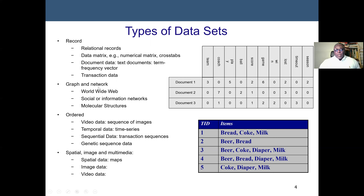Now we move to graph and network data sets, which are unstructured. We can generate data from the worldwide web, such as Facebook, Instagram, or other networks — social or information networks. We also have chemical data generating molecular structures. These are unorganized, representing the smallest, higher-ranking level of data.